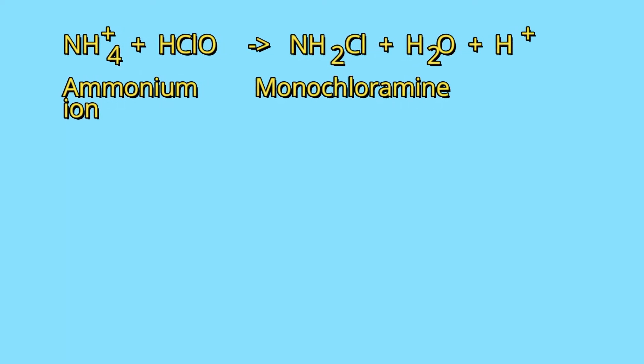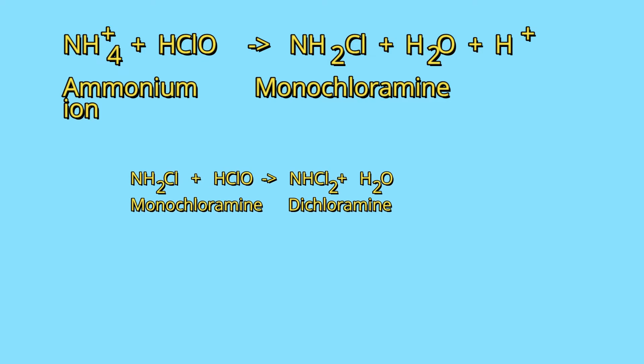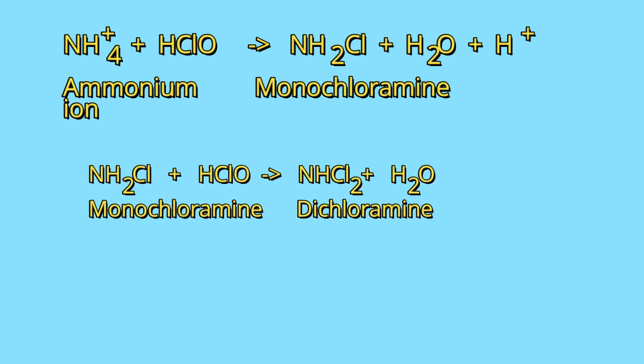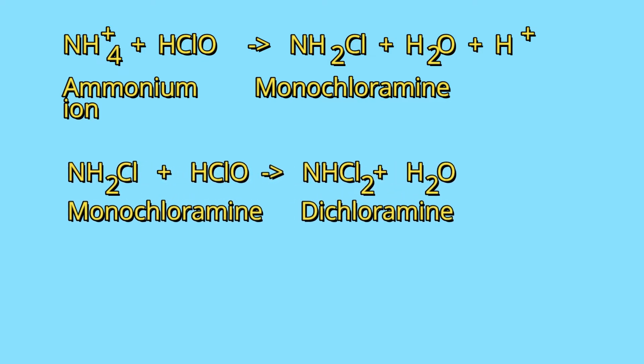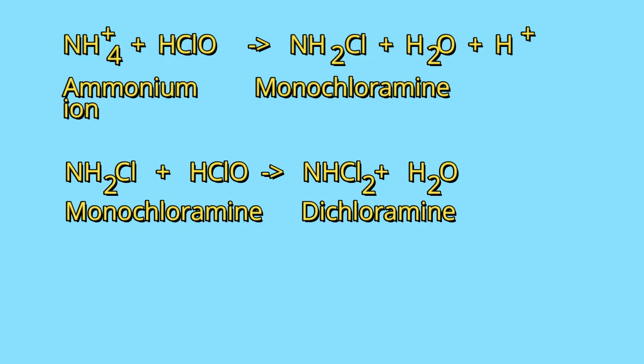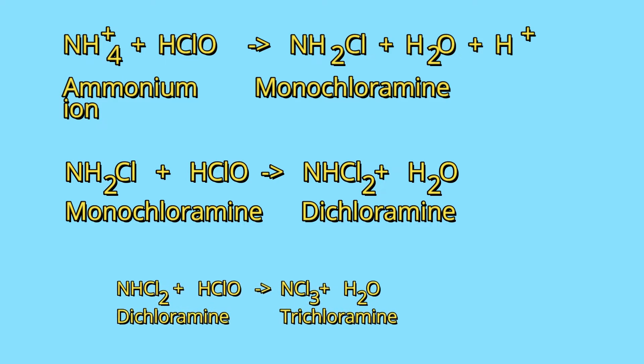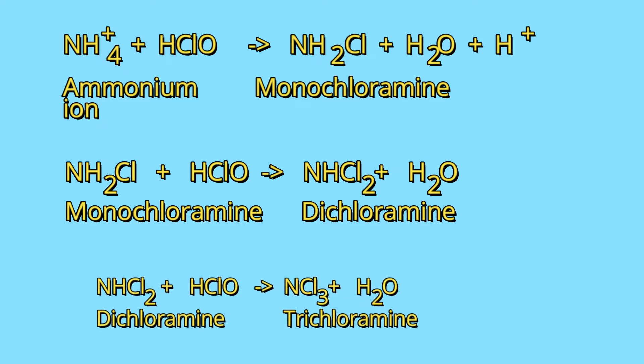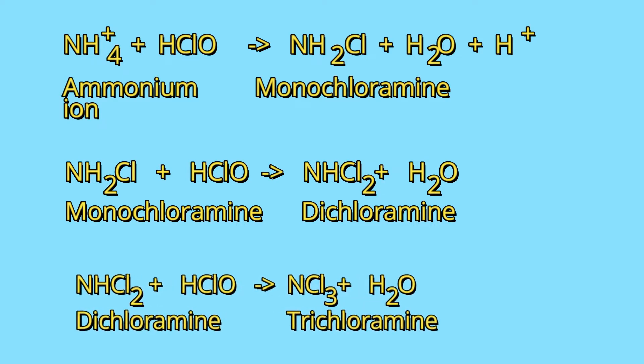Monochloramine will react with hypochlorous acid with the formation of dichloramine. Dichloramine will react with hypochlorous acid with the formation of trichloramine. The three compounds formed — monochloramine, dichloramine, and trichloramine — are called combined residual chlorine.